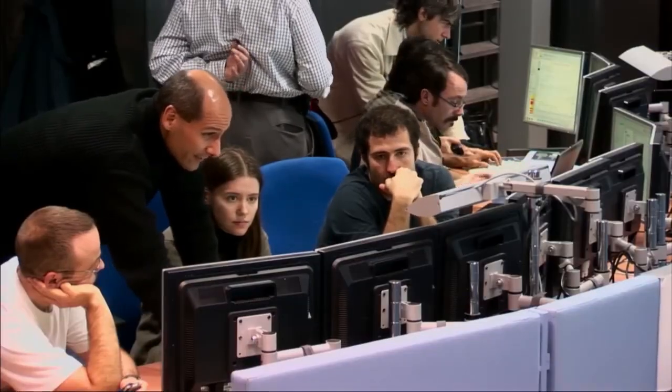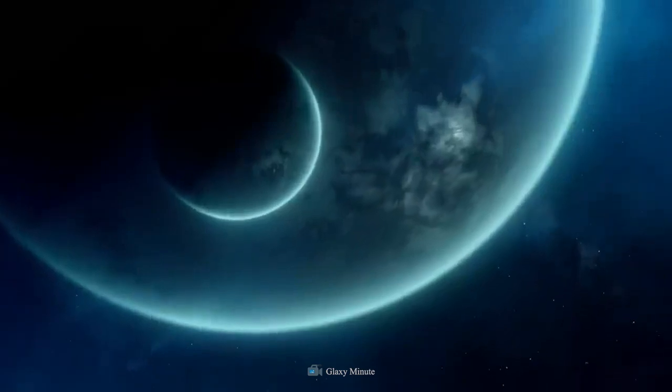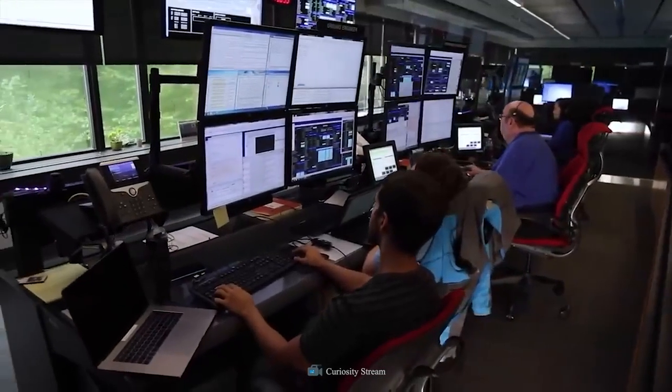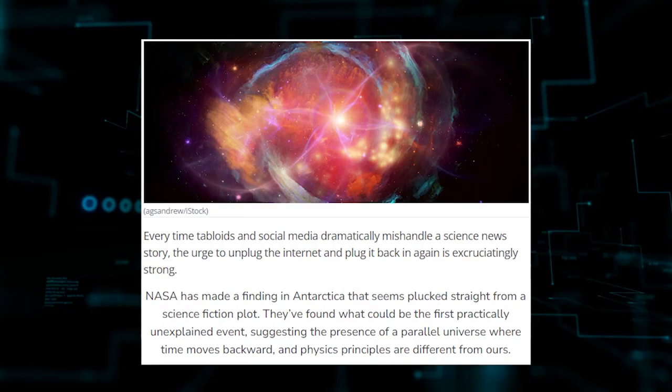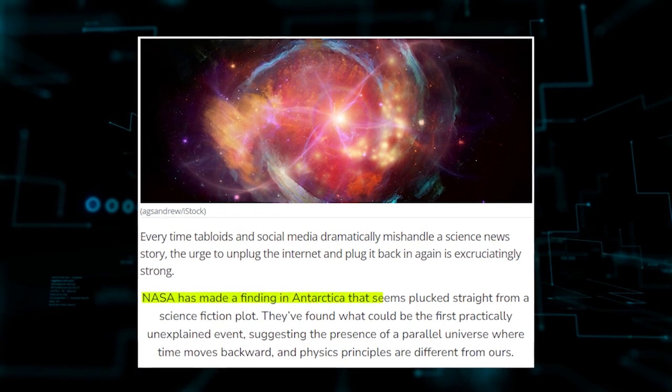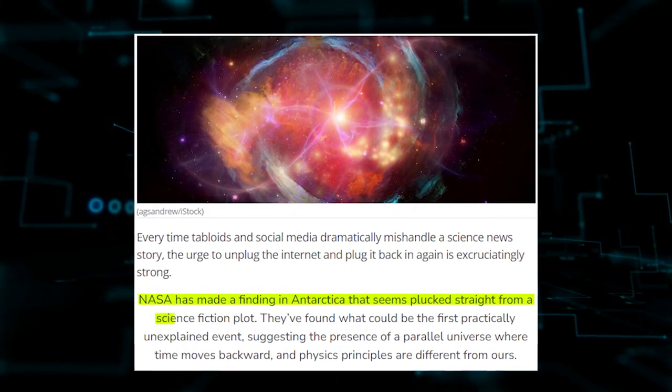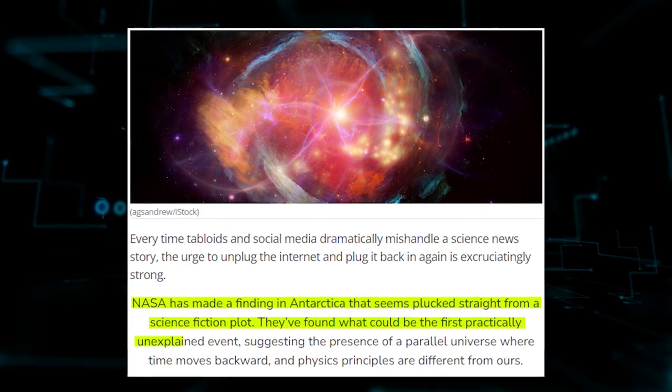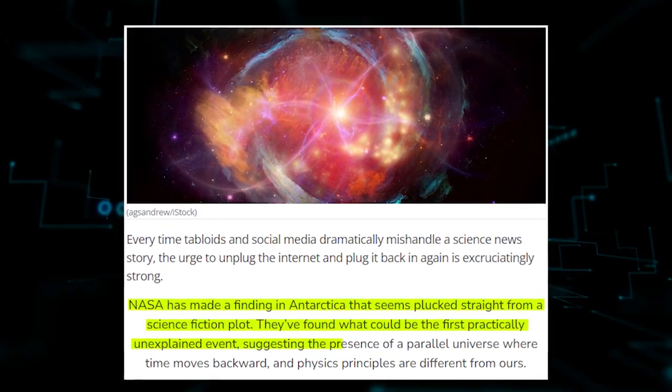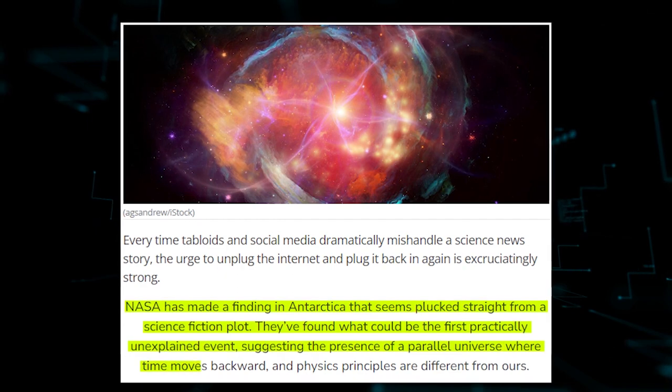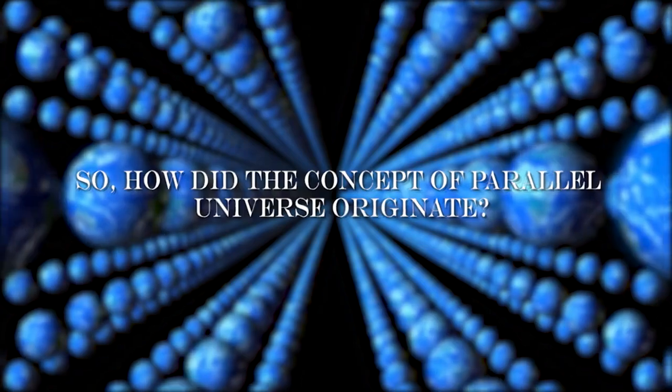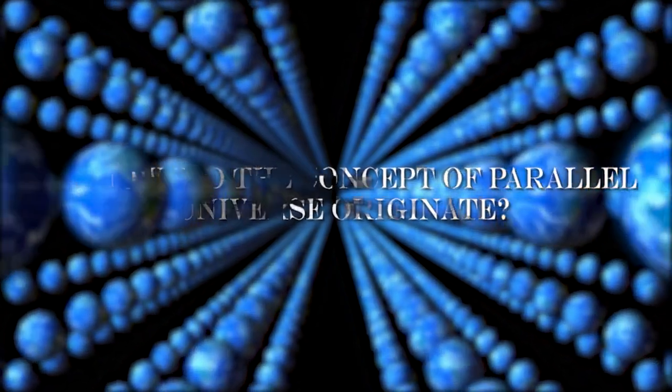Some scientists have laughed at this idea, but there's more and more proof that there are parallel universes and this new evidence has prompted scientists to investigate the possibility further. NASA found something in Antarctica that seems to have come straight out of a science fiction plot hole. They found what could be the first practically unexplainable event, which suggests the existence of a parallel universe where time goes backwards and the laws of physics are different from our own.